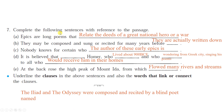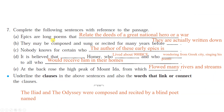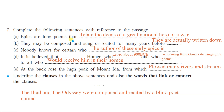Complete the following sentences with reference to the passage. First sentence: 'Epics are long poems that relate the deeds of great national heroes or a war.' Now underline the clauses in the above sentence and also the words that link or connect the clauses. In this sentence, everything in orange color is the clause and it is connected with the word 'that'. So 'that' is the connecting word here.